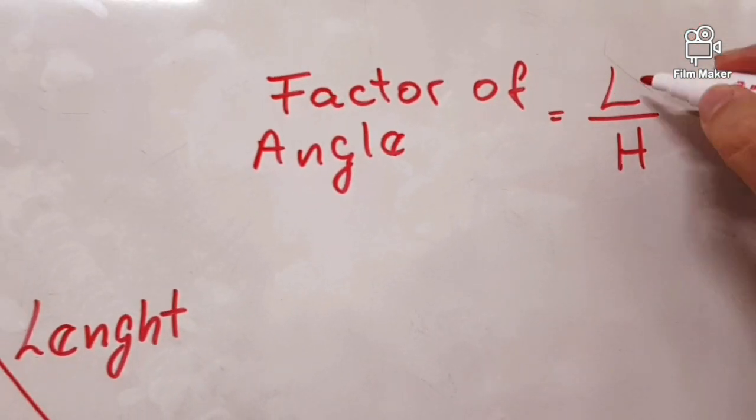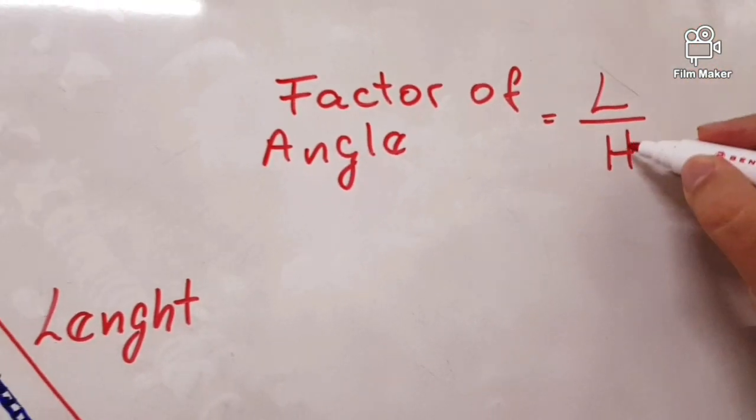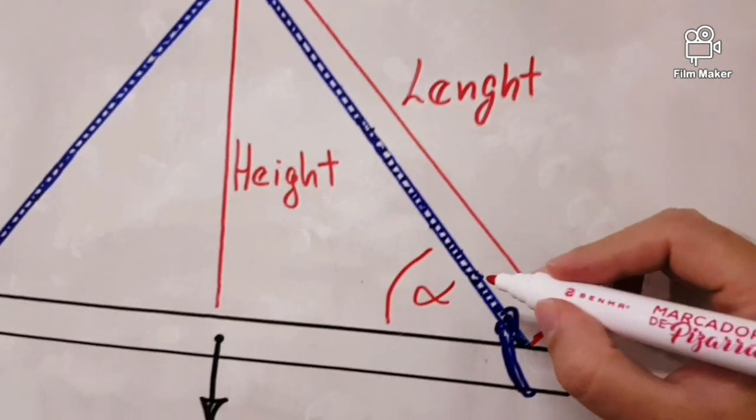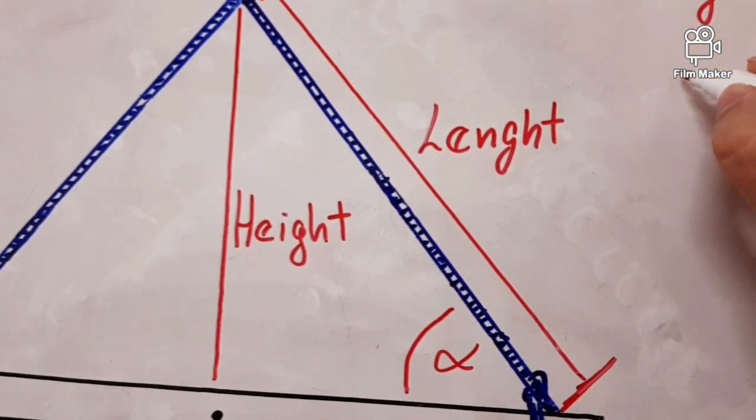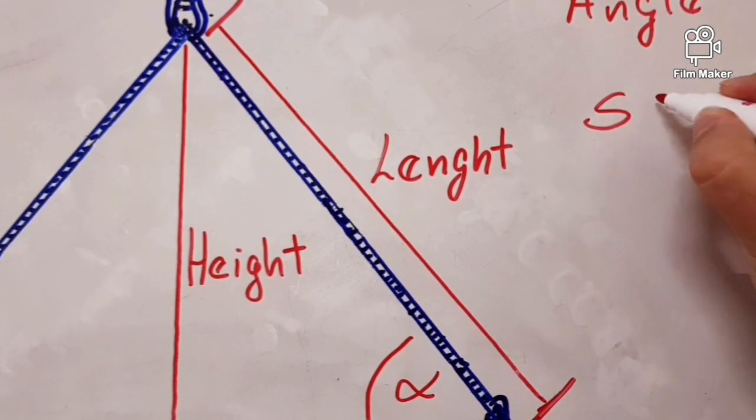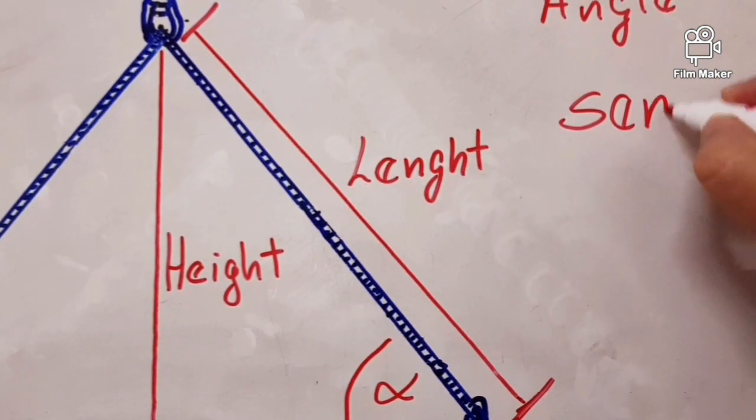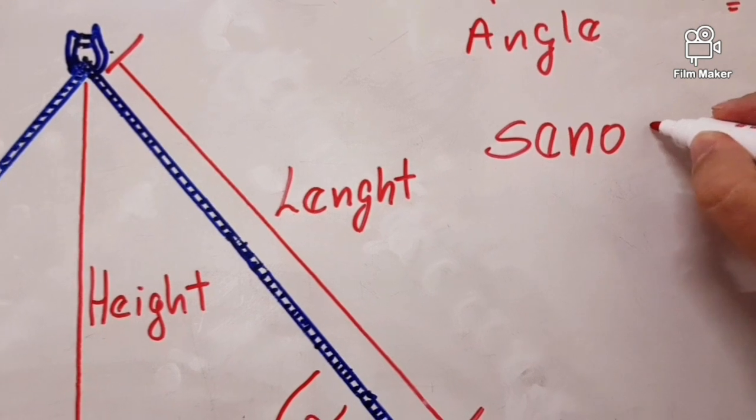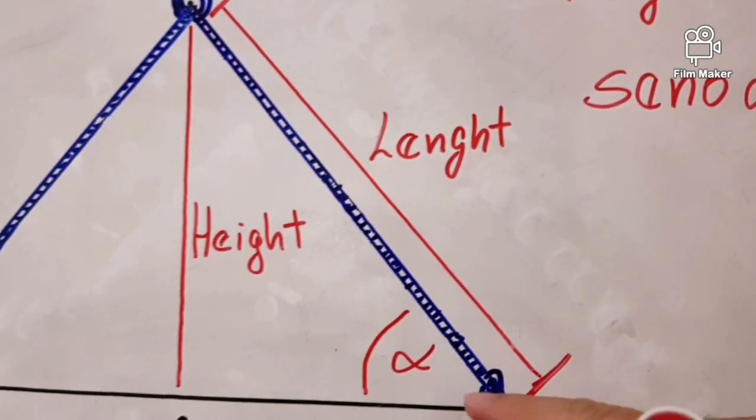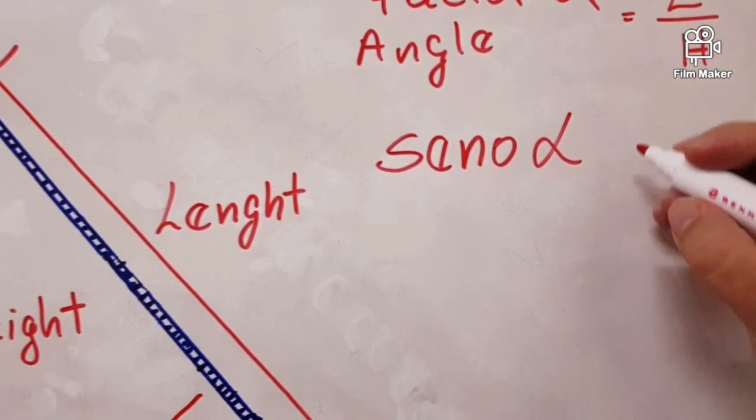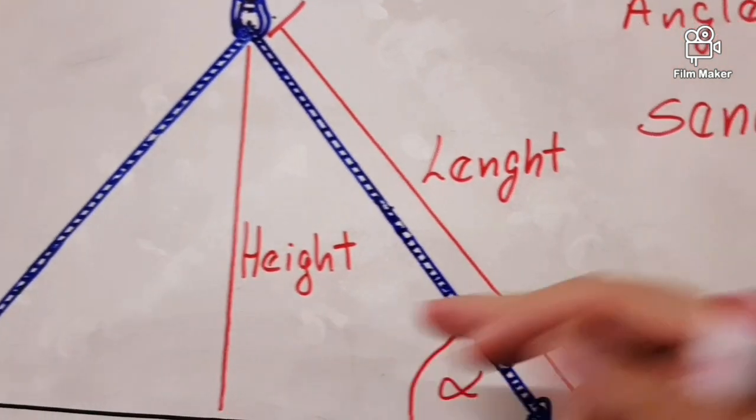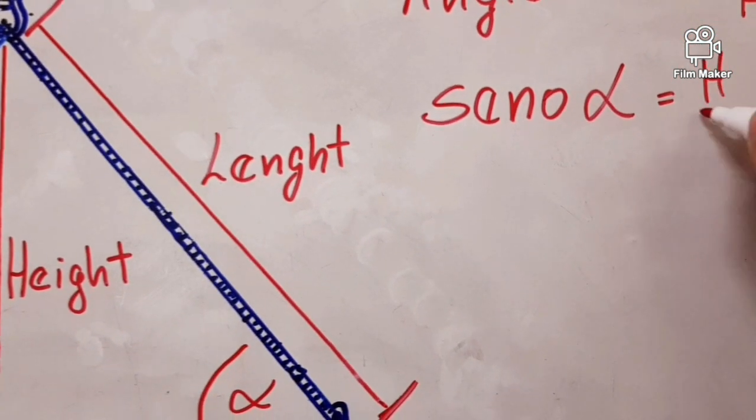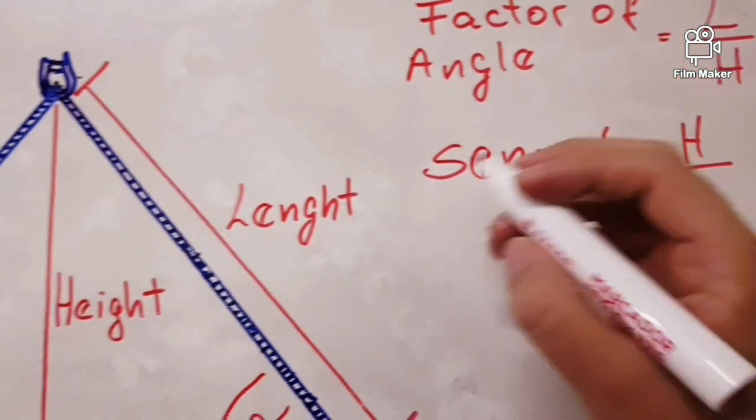I'm gonna say this one more time: the factor of angle is the length divided by the height. If we don't have the length or the height, I can use the angle. We all know that the sine of the angle, the alpha angle, is equal to the height divided by the length.